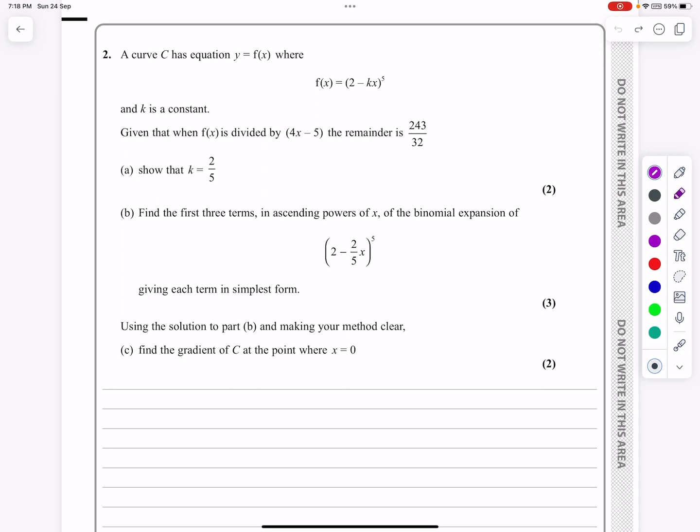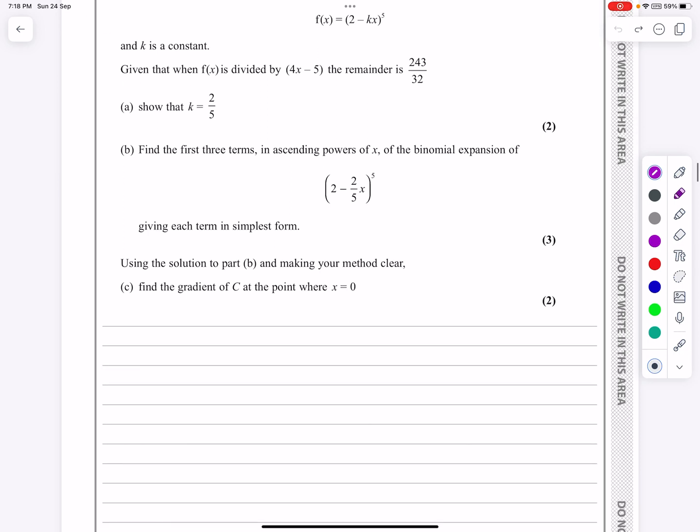Okay, let's jump straight in and look at part A, which says f(x) is equal to (2 minus kx) to the power of 5. And it says that when f(x) is divided by (4x minus 3), the remainder is 243 over 32. So what that's telling me, just quickly, if 4x minus 3 equals 0, 4x equals 3, x equals 3/4. So that's what I'm going to put into my function there then.